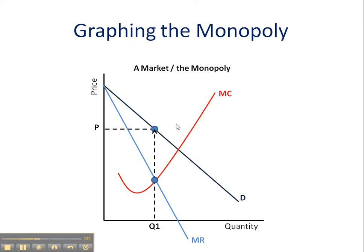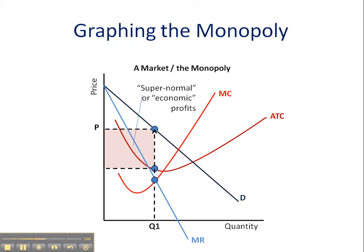We still don't know whether it's a profitable firm — we need the average total cost curve, so I'm going to draw one in right here. I'm going to note where the profit maximizing rate of output bisects the average total cost curve, denote it here, and fill in that revenue box. That is a supernormal profit.